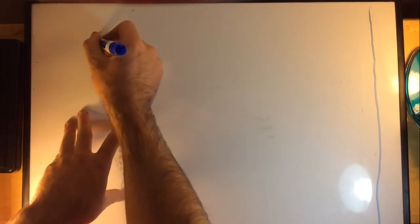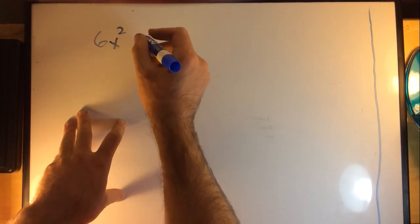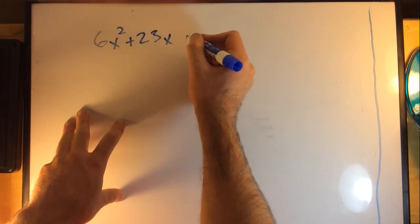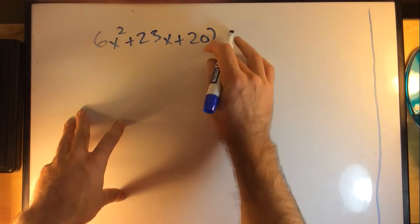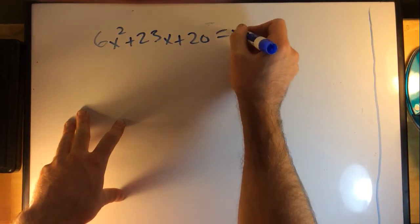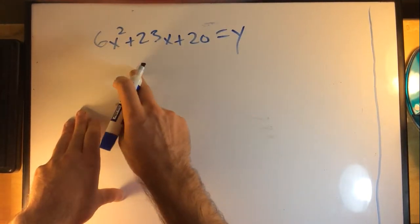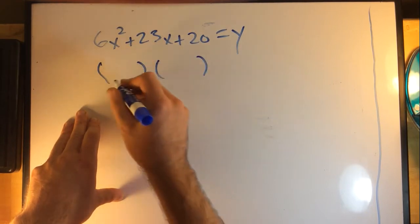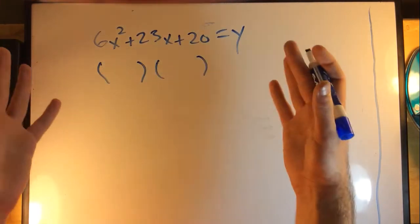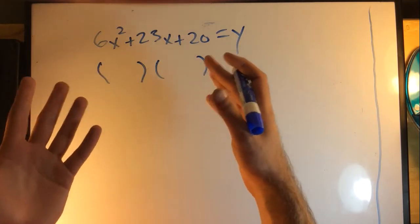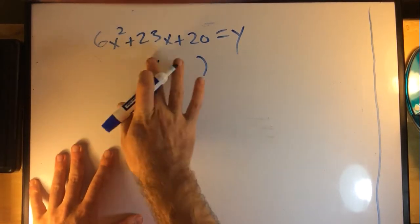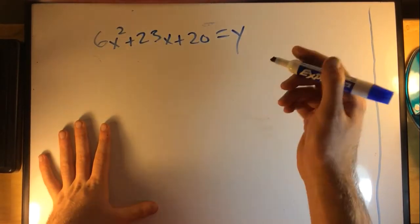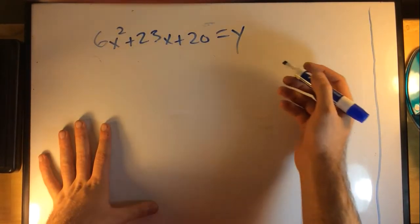We have a problem like 6x² + 23x + 20 = y, and we're supposed to write this in factored form. Say you've tried factoring it, you've tried testing different numbers a few times, you've gotten frustrated, and you want a more systematic approach to solve this. At that point you might call on the slide rule or the illegal move method.